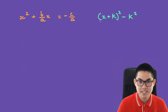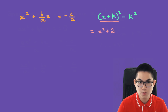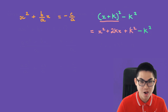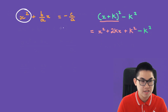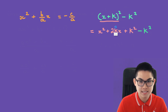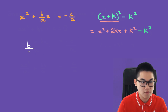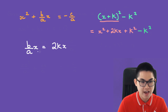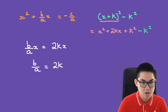Let's expand this. That's going to be x squared plus 2kx plus k squared, and don't forget the minus k squared. We have an x squared here and the term b over a times x, which corresponds to 2kx. So b over a times x is equal to 2kx. We can divide both sides by x: b over a is equal to 2k, which means that k is equal to b over 2a.